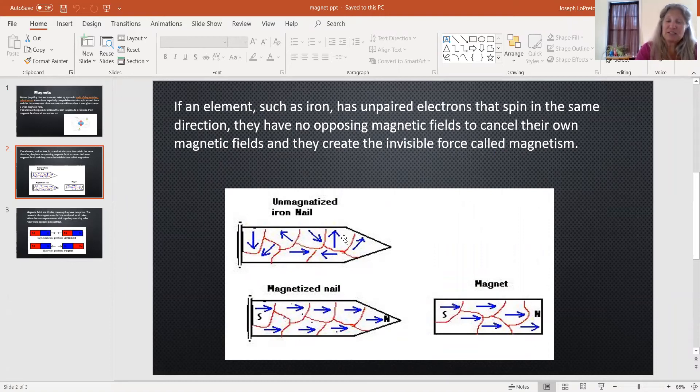And this top picture here is a nail, an iron nail, and the electrons are going in all different directions. But if it's been touched by a magnet, and here's the magnet, all of them are going to start going in the same direction, just like the magnet. The magnet is going to be strong enough to pull all the electrons in one direction.